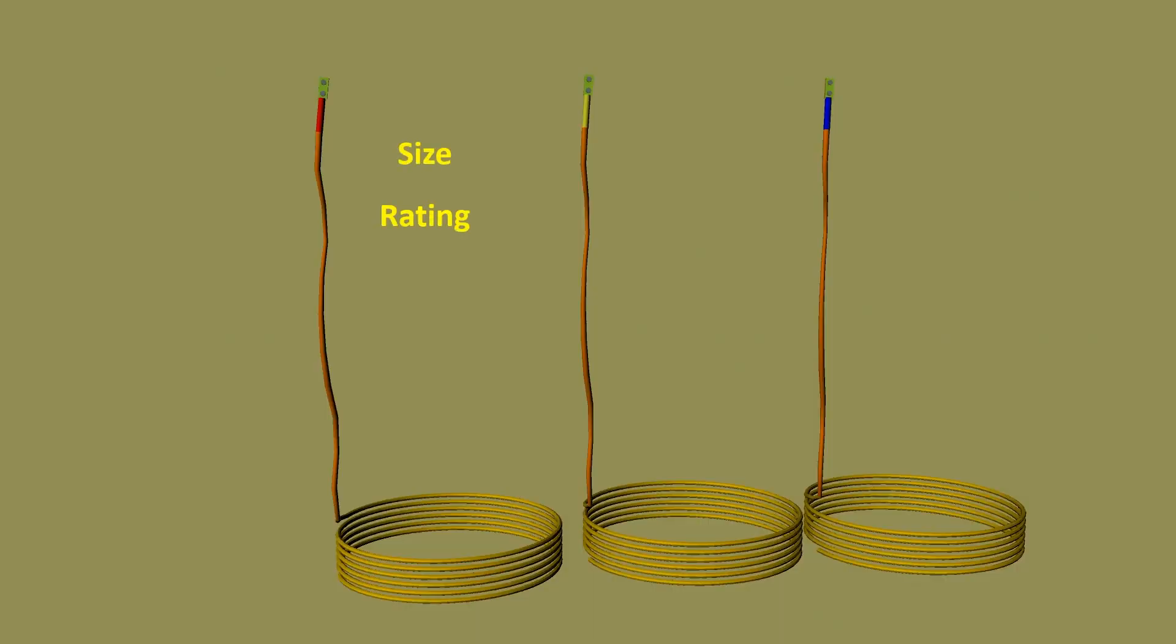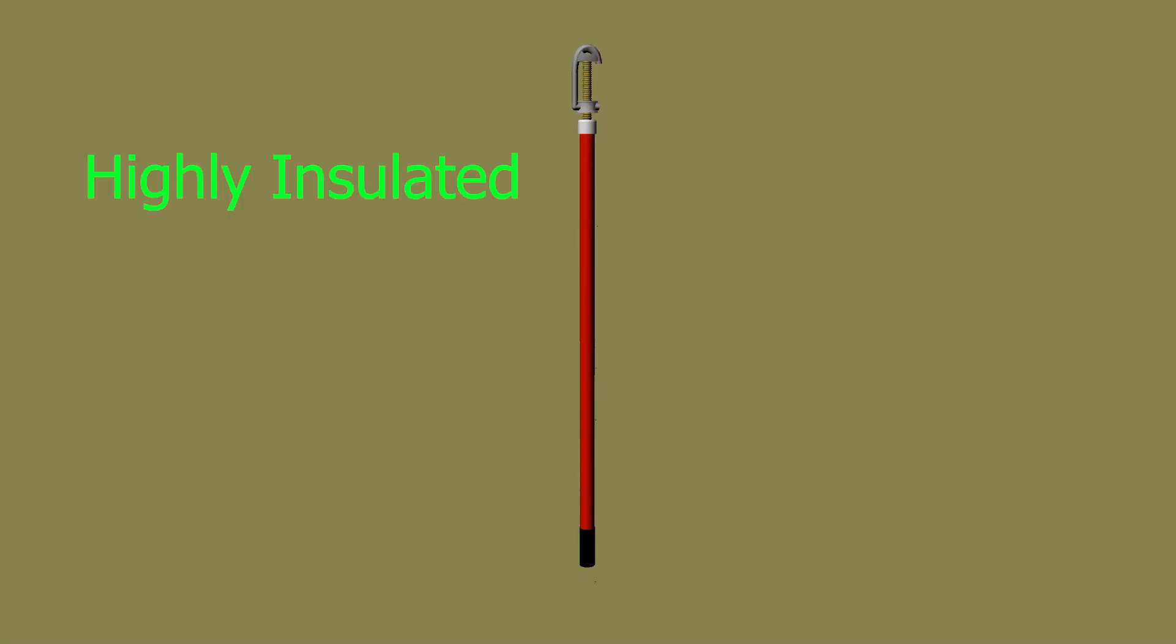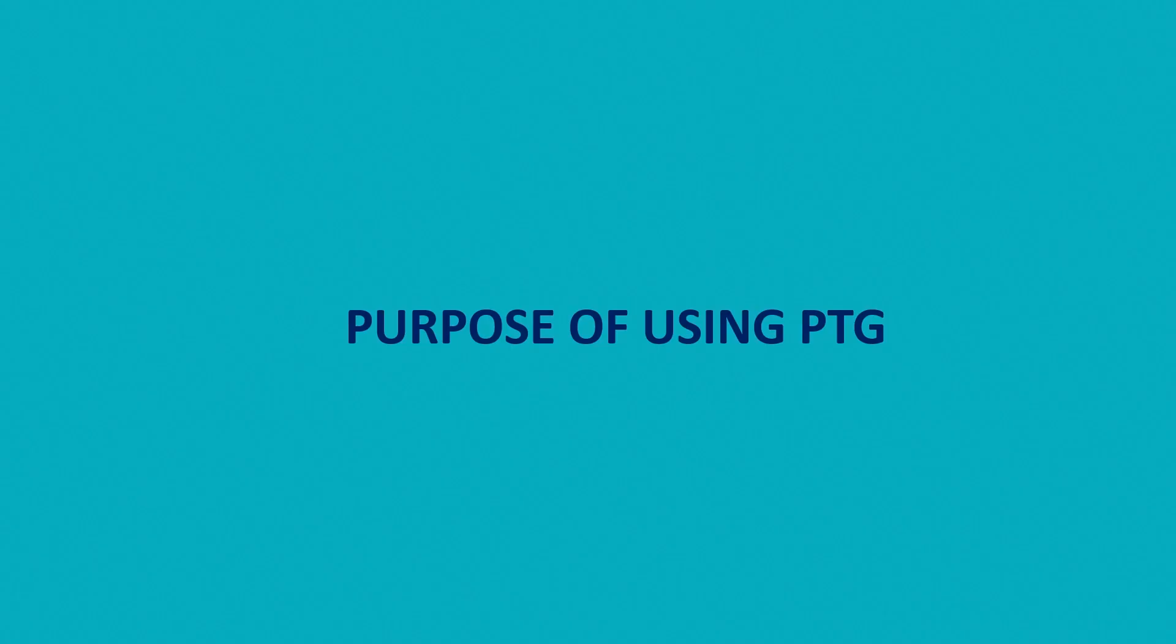The size and rating of the grounding cables are determined as per international standards for different voltage ranges. Highly insulated portable sticks are used for connecting the grounding cables to the conductor or other electrical equipment.